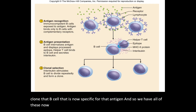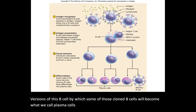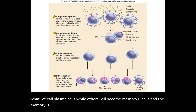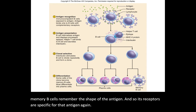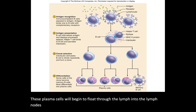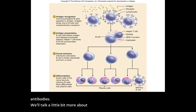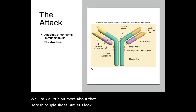We now have all of these cloned versions of this B cell, by which some of those cloned B cells will become what we call plasma cells, while others will become memory B cells. The memory B cells remember the shape of the antigen, so their receptors are specific for that antigen. These plasma cells will begin to float through the lymph into the lymph nodes and through the cardiovascular system, and they will begin to release antibodies.